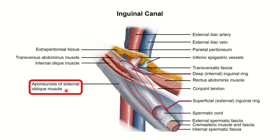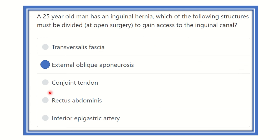That structure is the aponeurosis of the external oblique muscle. So our final answer is the external oblique aponeurosis, which must be cut to gain access to the inguinal canal.